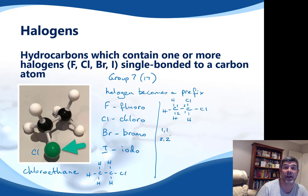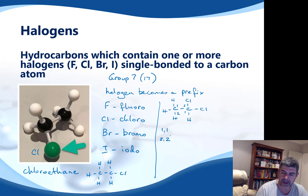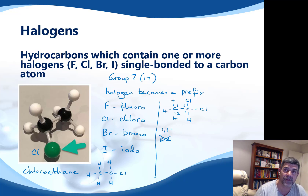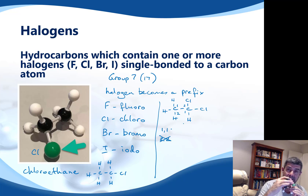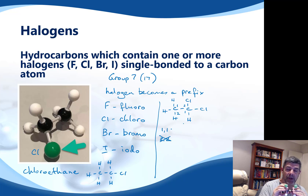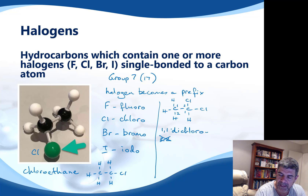I'm always going to go with whichever combination of numbers sequentially gives me the smallest number. I look at the first number: one here versus two here. One is smaller than two, so the twos are out — it must be one, one. To indicate that I've got two chlorines rather than just one, just as we indicate two oxygens by calling it dioxide, we're going to call this 1,1-dichloroethane.